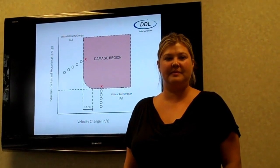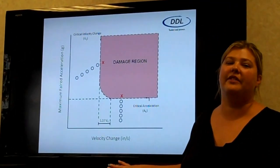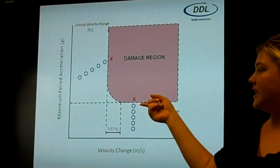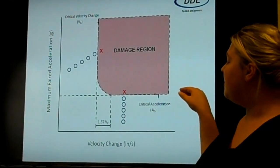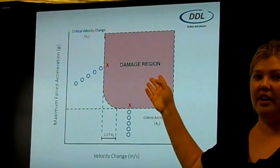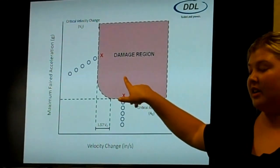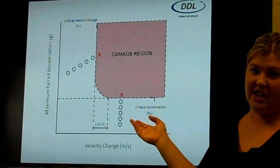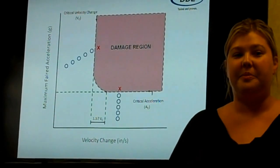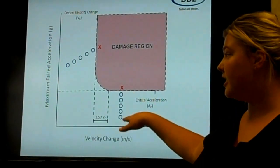What type of data is collected for this test, and what will the results help determine for the customer? From this test, you'll get a damage boundary curve. It takes the data from test method A — the velocity change to critical velocity — and you'll also get the maximum measured acceleration change from test method B. These two lines get plotted, and you'll get a damage region: if your product sees an acceleration and velocity combination in this shaded region, failure is likely. If it's in the unshaded region, no damage is likely to occur. The parameters this is dependent on are the shock pulse shape, the acceleration, and the velocity changes.